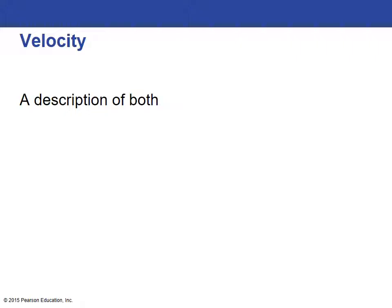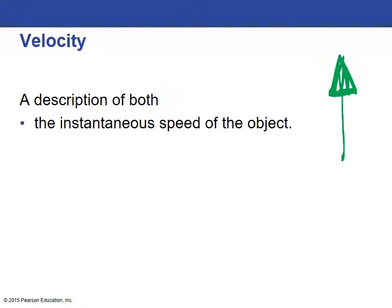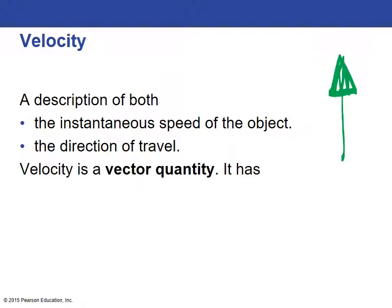Velocity, I'll go to the punchline. Velocity is a vector. Remember what a vector is? A vector has both magnitude and direction. That's the difference between velocity and speed.